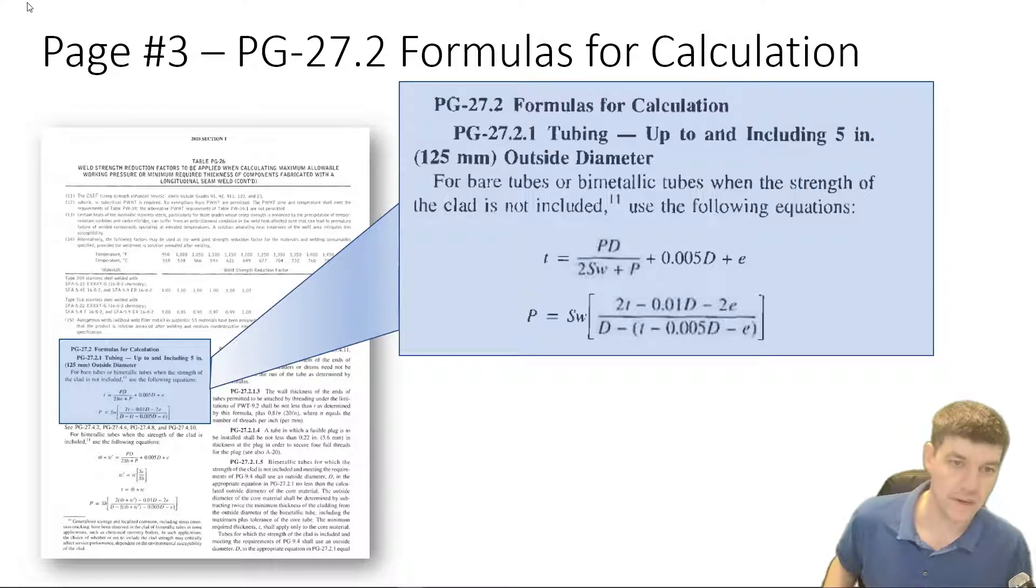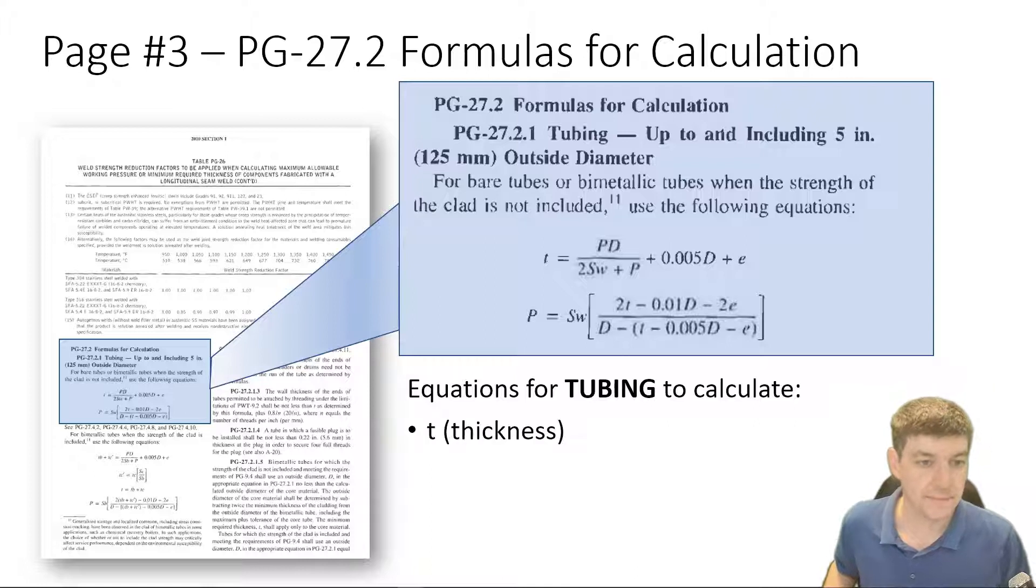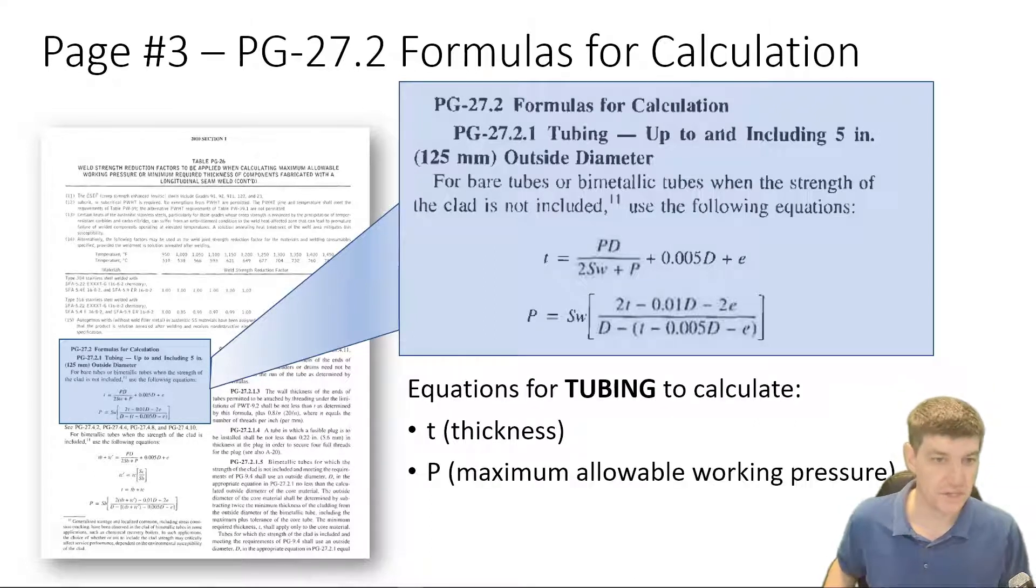These are for non-bimetallic tubes. They're for bare tubes. So we don't have any external strengthening to the tubes. And if they're just tubes, here's how we calculate them. We have two equations. One of them is for thickness, T. And then the other variation is if we want to calculate P, which is known as the MAWP, or the Maximum Allowable Working Pressure.